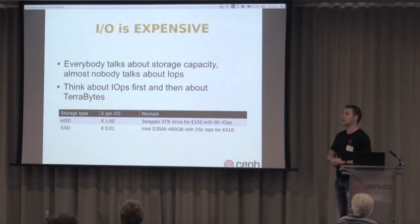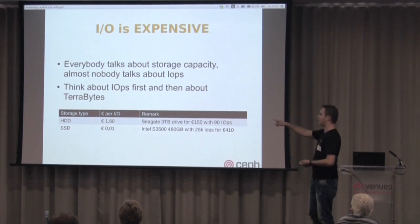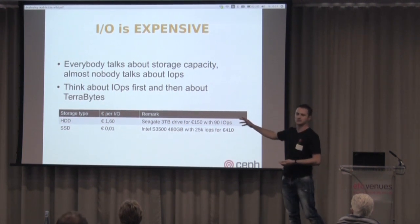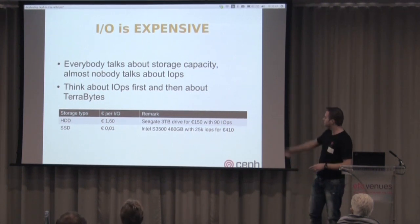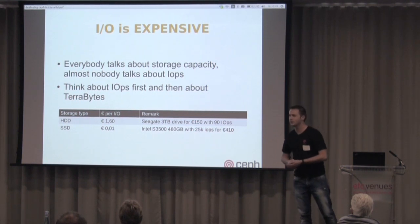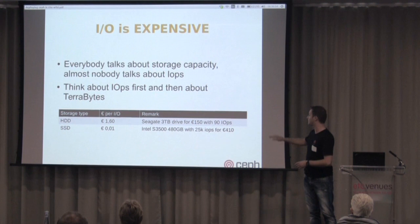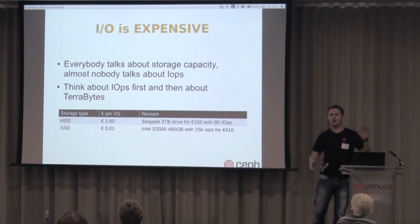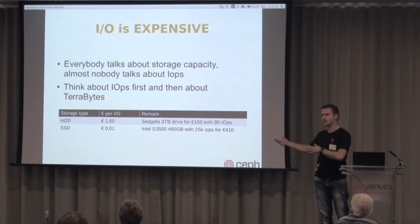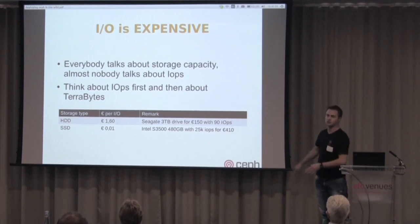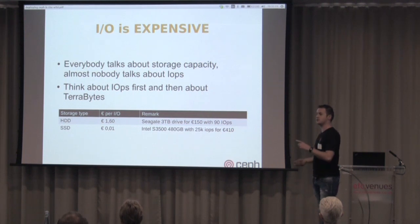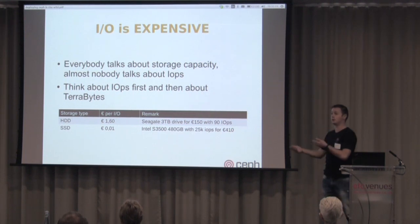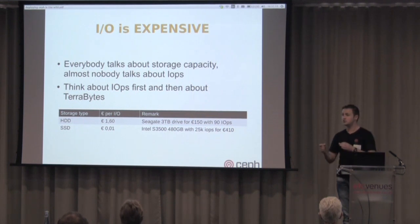IO is expensive — but where exactly? A single spinning drive does about 90 IOPS. A 3TB drive is about 150 euros, so you're paying roughly 1 euro 60 per IO. When you look at an SSD doing about 25,000 IOs per second, that's about one cent per IO. Suddenly IO is not expensive at all. Storage capacity might be expensive when you want high IO, but IOs themselves are not expensive.